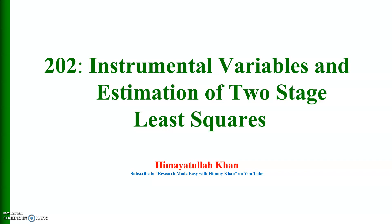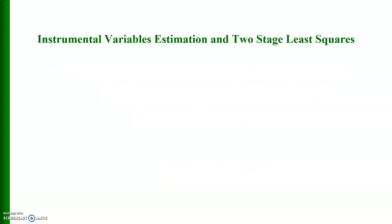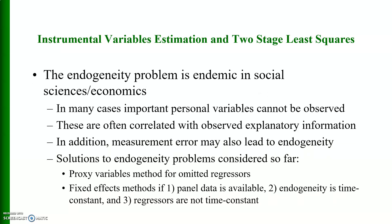Welcome to video number 202. Today's video is based on instrumental variables and the estimation of two-stage least squares. In econometrics, there is a problem called endogeneity, and this is a very serious issue while modeling econometric equations. This problem is endemic in social sciences, especially in economics.